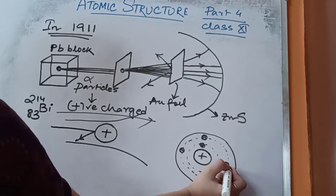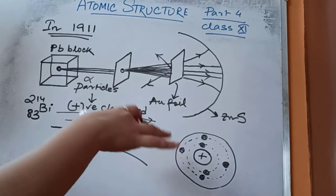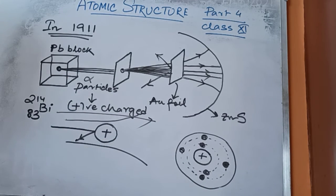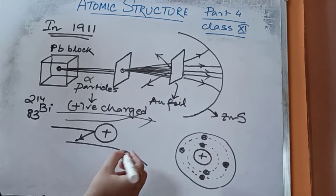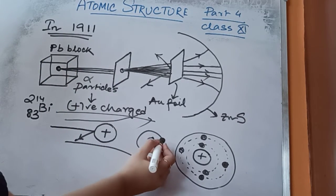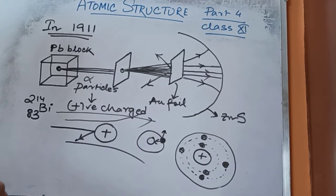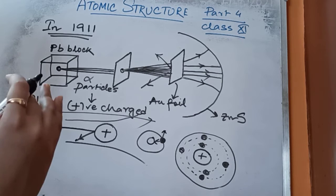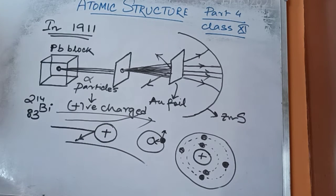He said that the electrons remain in imaginary orbits and continuously revolve around the nucleus. A body moving in a circular path experiences two forces: the force toward the center is known as the centripetal force, and the force toward the outside is known as the centrifugal force. Since the two forces balance, the moving object will move continuously in the circular path.